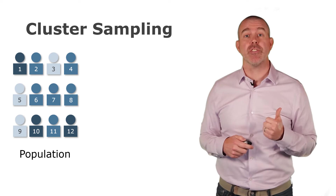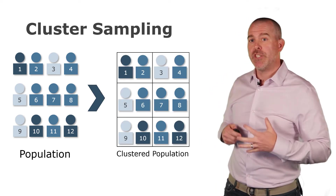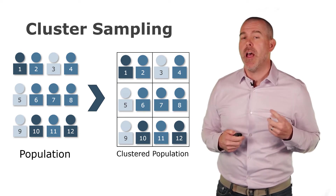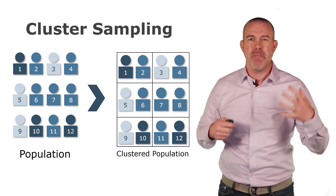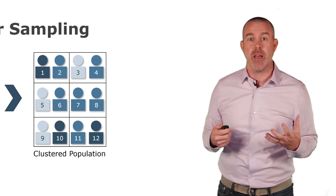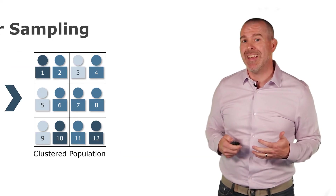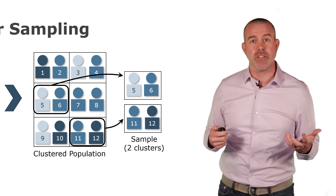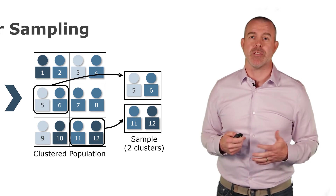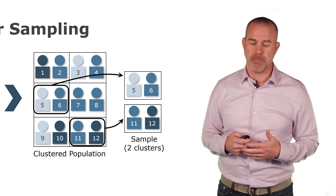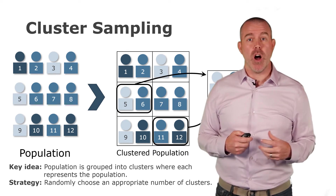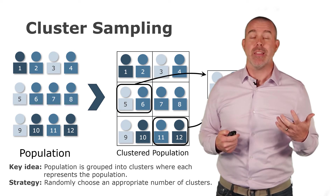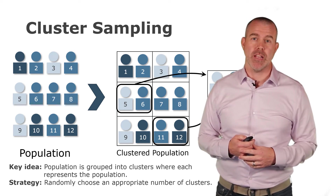The last strategy is called cluster sampling. This is when your population is already clustered or grouped together. The key is that those clusters must be mixed and truly representative of the population. If they are, you randomly select a certain number of those clusters. Here we had six clusters and randomly selected two, giving us our sample size of four.